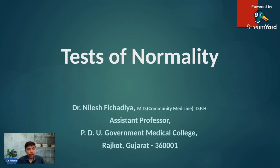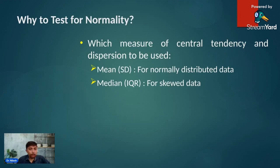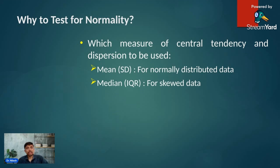First, let us discuss why we do the test of normality. When we analyze data and want to present it in a conference, journal, or publication, we need to use several central tendency and dispersion measures — for example, mean and median for central tendency, and standard deviation and interquartile range for dispersion. If your data is normally distributed, use mean and standard deviation; if you have skewed data, use median and interquartile range.